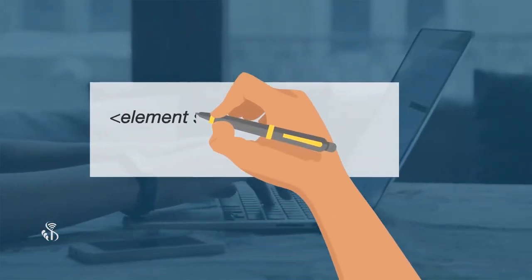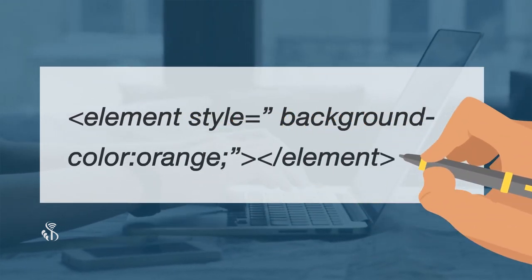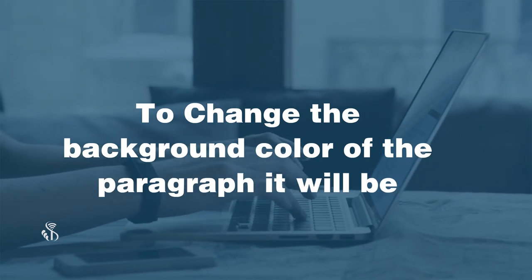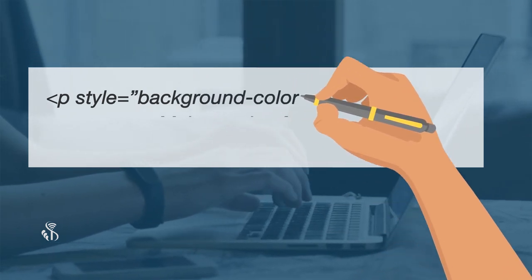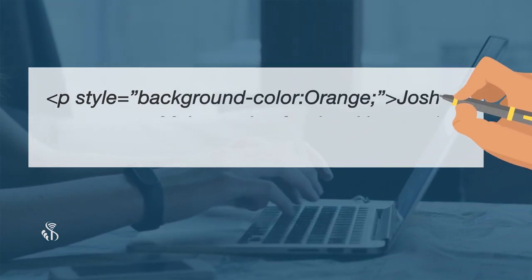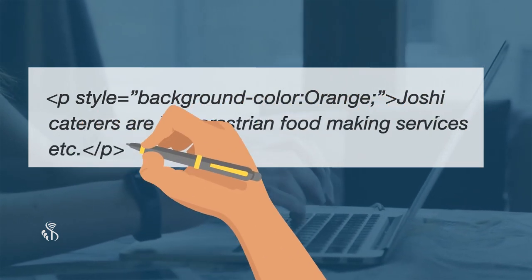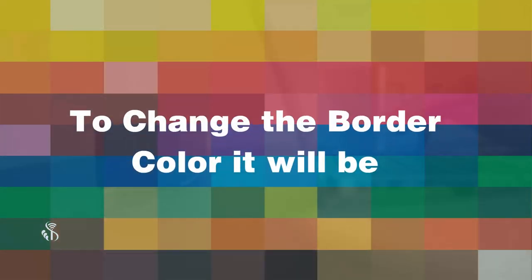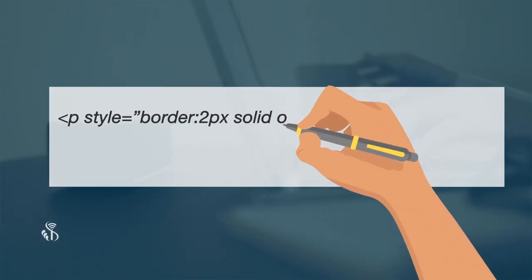Let us understand how to write the HTML syntax. To set background color: element style equals background-color orange. To change the background color of a paragraph: paragraph style equals background-color orange. To change the border color: paragraph style equals border 2px solid orange.